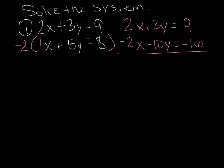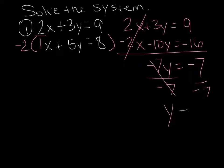So 2x and negative 2x cancel. And 3y plus a negative 10y is negative 7y. And 9 plus negative 16 is negative 7. Divide both sides by negative 7. So y equals 1.